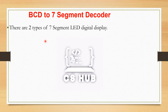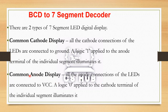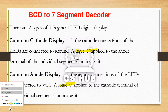There are two types of 7-segment LED displays. First, common cathode display: all cathode connections of the LEDs are connected to ground. When the logic input is 1, the individual segment illuminates — this is positive logic (active high). Second, common anode display: all anode connections are tied to VCC. In this case, logic 0 illuminates the segment — active low.